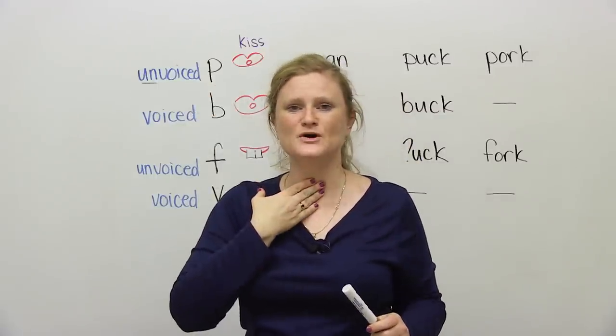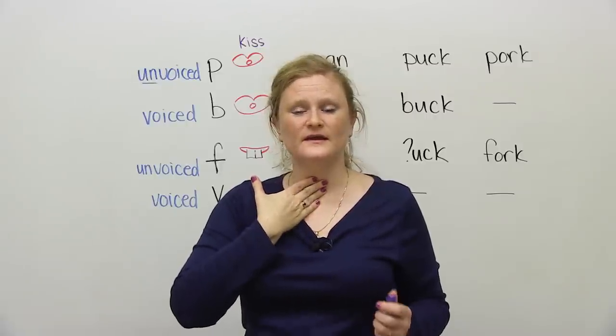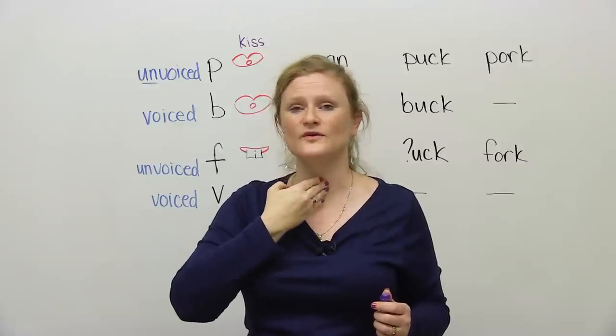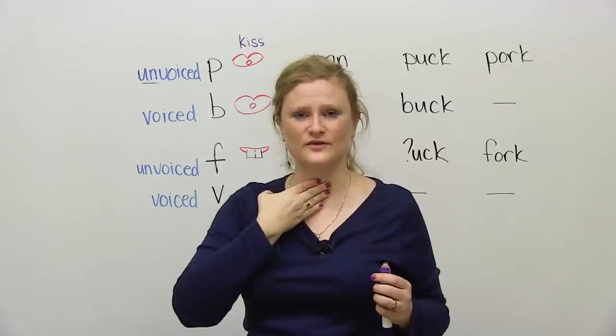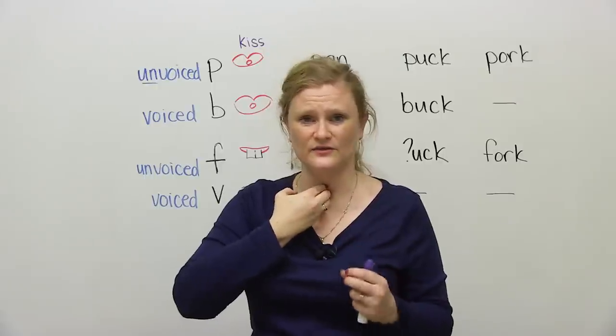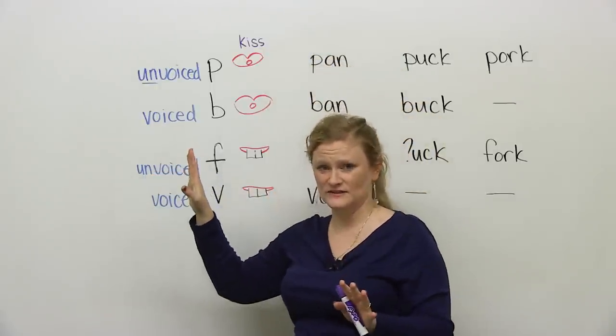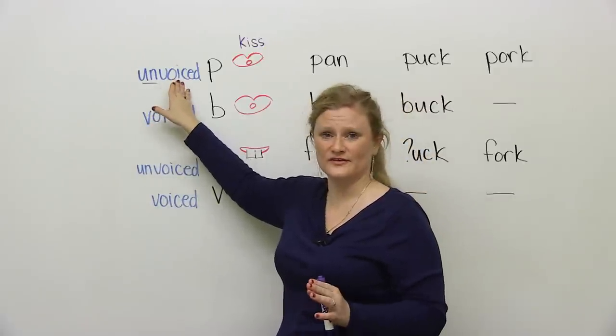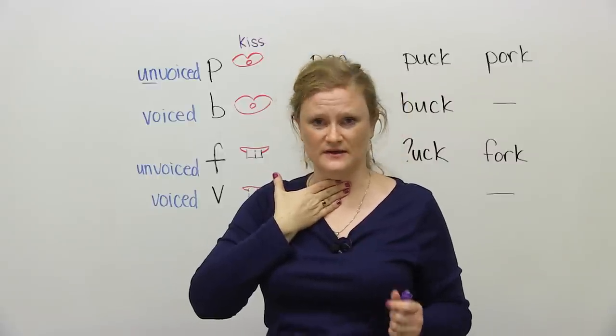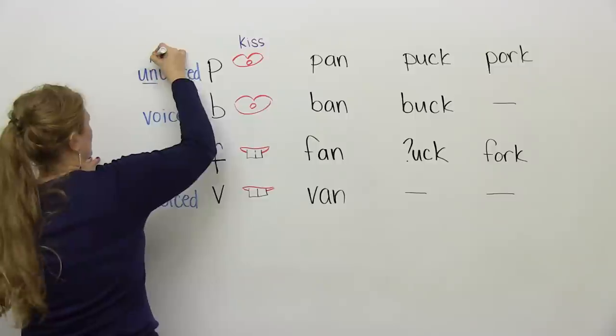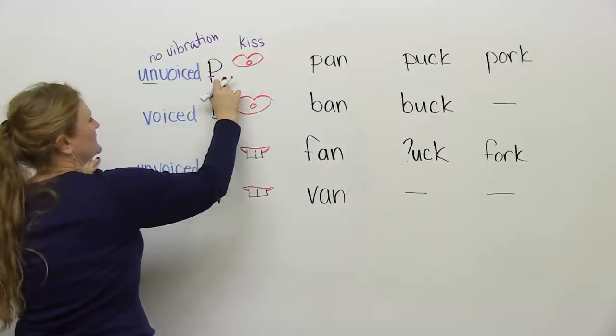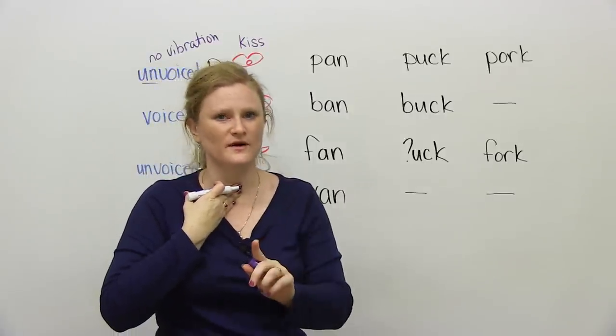When you are saying the P sound, you're going to make your kiss mouth. You're going to put your hand on your throat, and you're going to realize that your throat or your vocal cords do not vibrate. You should not feel any vibration in your throat. This non-vibration is called unvoiced. So if something is unvoiced, it means it does not vibrate in your throat. So the P sound is a kiss with no vibration.